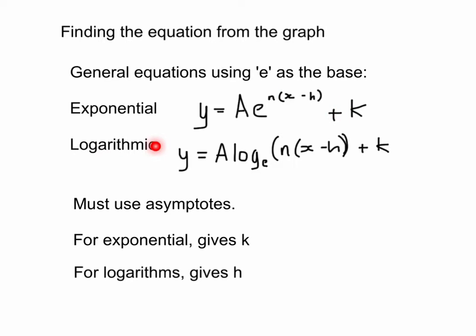And for the logarithmic general form, it's capital A again times log to the base e of n times x minus h, all enclosed by that bracket, and then plus k.